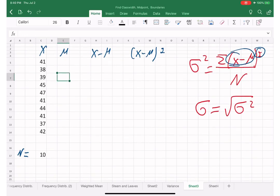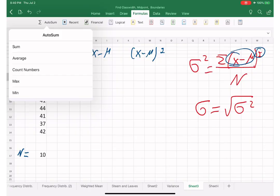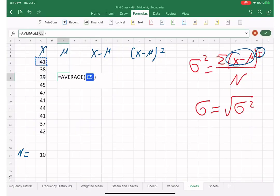Next, mu. It's going to be average. We're going to take the average of this one.